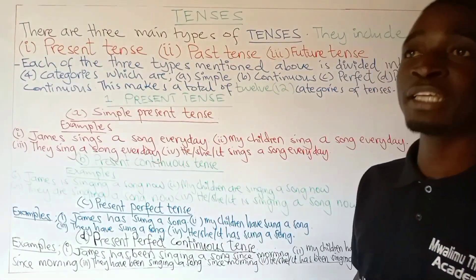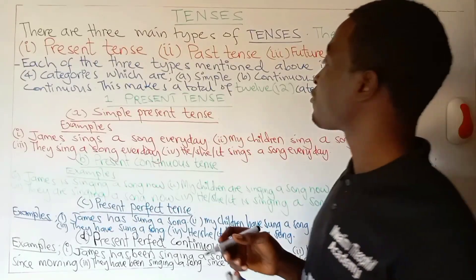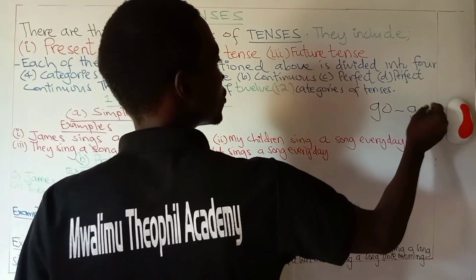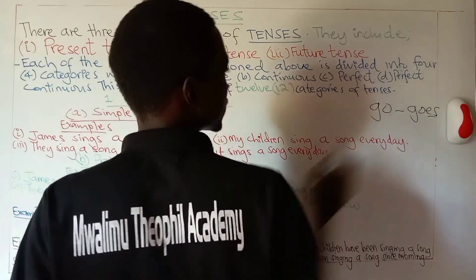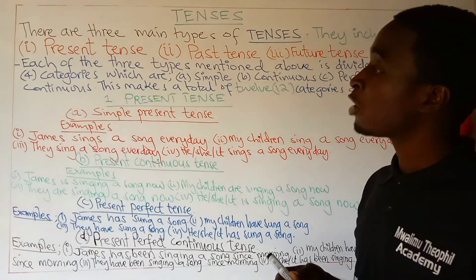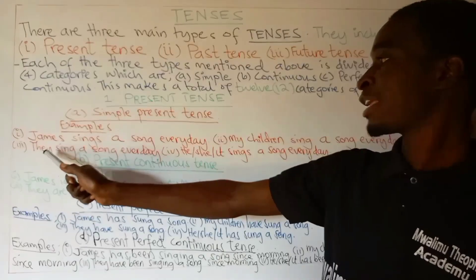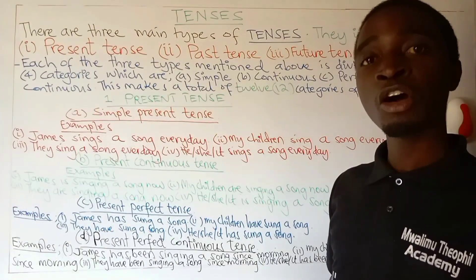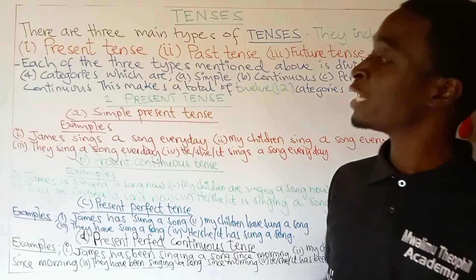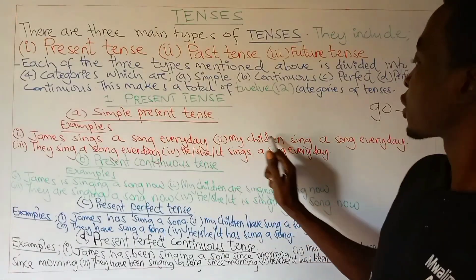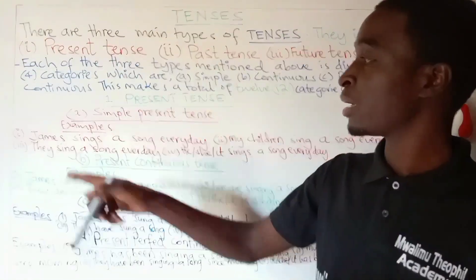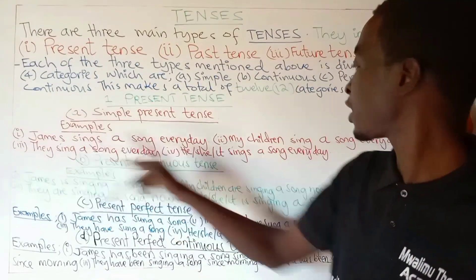It depends on the kind of verb. For example, if it is a verb like 'go,' it becomes 'goes,' so here we add 'es.' Whether to add S or ES depends on the kind of verb you have. Also, for pronouns like they and we, or nouns which are in plural, the verb remains in its infinitive form. As you see here: they sing, my children sing — my children is plural, so the verb remains as it is: sing.